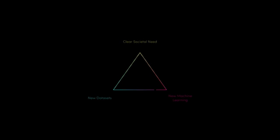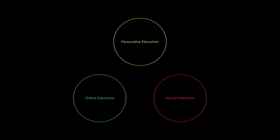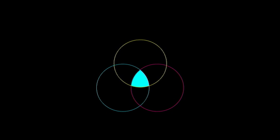But we now live in a very special time, a rare time in history. A time where the confluence of fields is enabling personalization to a whole new extent and at a whole new scale. These fields are online education, allowing us to collect immense data sets, and neural networks, allowing us to learn directly from that data. At the intersection, we have the next great education revolution. The next renaissance.